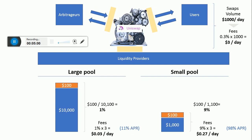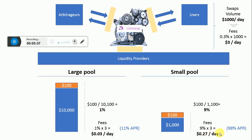So we invested $100 and we get $0.03 a day. On an annual basis, that works out to around 11% APR. Now let's consider the case of a small pool with the same volume — $1,000 a day, $3 a day in fees — but the pool size is only $1,000. If we invest our $100, we're going to own 100 divided by 1,100, which is 9% of the pool. Every day we capture 9% times $3, which equals $0.27 per day. We still invested $100, and this works out to about 98% APR.